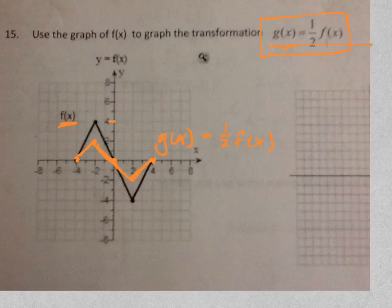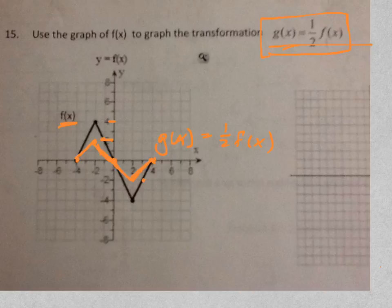So our graph is just going to be half as high — that's what g of x will be. g of x equals one half f of x just means it goes half as high, but the zeros don't change. Notice this point right here was negative 2, but now it's negative 1. This point right here was positive 2, but now it's positive 1. That's how you read those graphs.